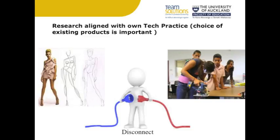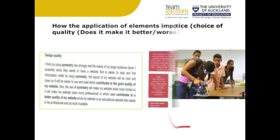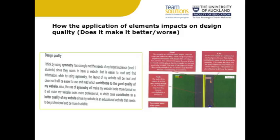The third point is that candidates who critiqued the application of design elements within existing products and outcomes relevant to their own technological practice, and then applied this knowledge within the development and evaluation of their own outcomes, continued to be more successful and were significantly more likely to gain merit and excellence grades. The requirement to describe the quality of an outcome is clearly stated within Explanatory Note 2 of the Achievement Standard. Some candidates' achievement was restricted due to different products being used to identify and describe the application of each design element — there was no coherence — and these candidates were unlikely to advance beyond an achieved grade due to a lack of explanation and use of a less robust compare and contrast model.